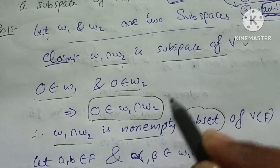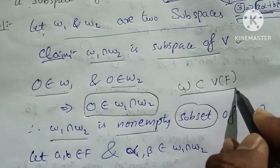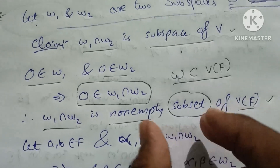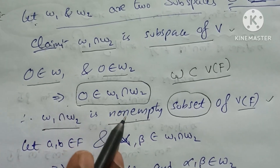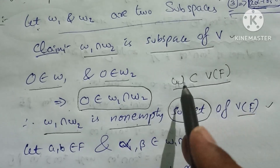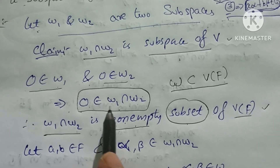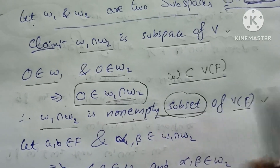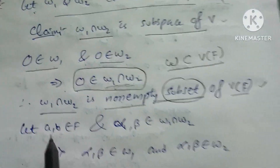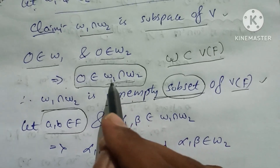W1 intersection W2 is a non-empty subset of the vector space. Now let's take a different condition. Let a, b belong to the field F, and let alpha, beta belong to W1 intersection W2.